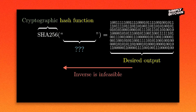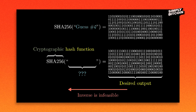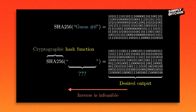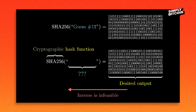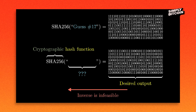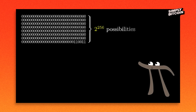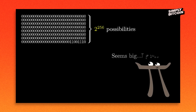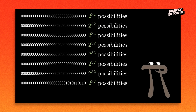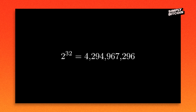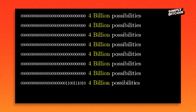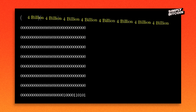If you want to find a message whose SHA-256 hash is some specific string of 256 bits, you have no better method than to just guess and check random messages. This would require, on average, 2 to the 256 guesses. This is a number so far removed from anything we ever deal with that it can be hard to appreciate its size. 2 to the 256 is the same as 2 to the 32, multiplied by itself 8 times. What's nice about that split is that 2 to the 32 is 4 billion — at least a number we can think about. So all we need to do is appreciate what multiplying 4 billion times itself, 8 successive times, really feels like.